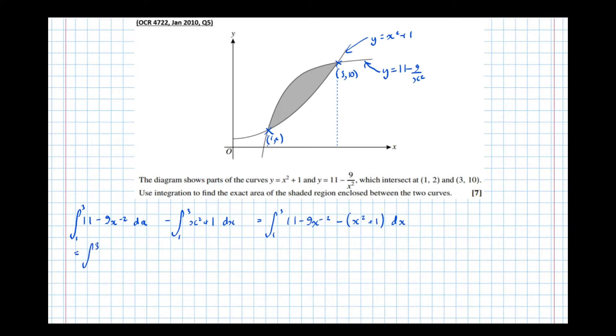And that's equal to the integral between 3 and 1, of, well, 11 take 1 is 10, minus 9 x to the minus 2, minus x squared dx. We can also do them separately, but this way is quicker, and in my opinion, easier.